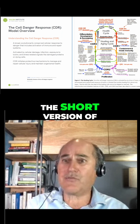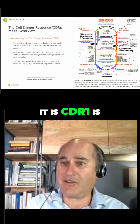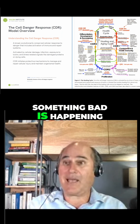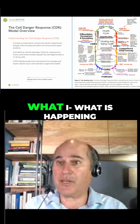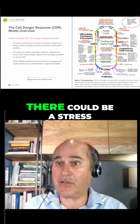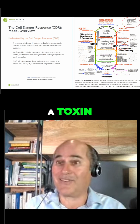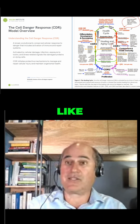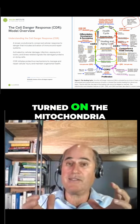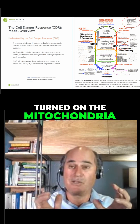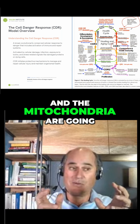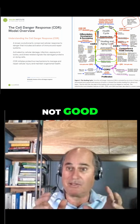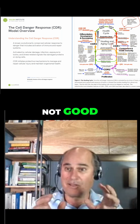Basically, the short version of it is CDR1 is 'something bad is happening.' What is happening? There could be a stress, an injury, a toxin, an infection. Something has turned on the mitochondria and the mitochondria are going — yikes, not good.